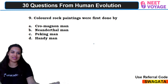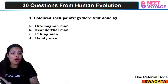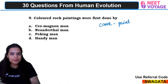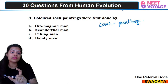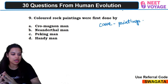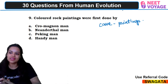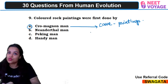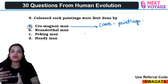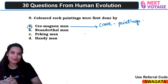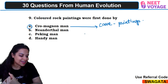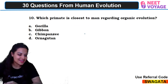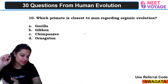Ninth question: colored rock paintings were first done by whom? Cave paintings are proper proof of civilization. It was seen in Cro-Magnon man — Cro-Magnon man started cave paintings first. Civilization, creativity, and use of art — all these things were seen in Cro-Magnon man. Ram Prasad, Samyak Jan, and Pari Kejriwal answered correctly.